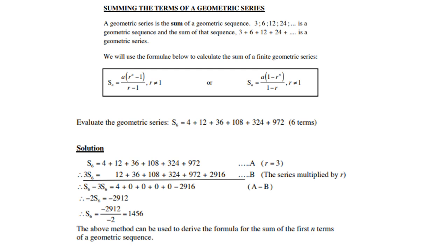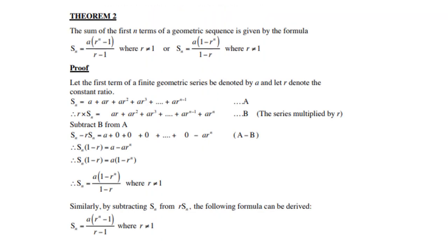The above method can be used to derive the formula for the sum of the first n terms of a geometric series. Let's look at the proof of the formula — you don't have to know the proof but it's always good to know where the formula comes from. We call it Theorem 2.